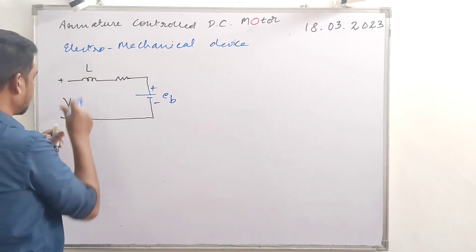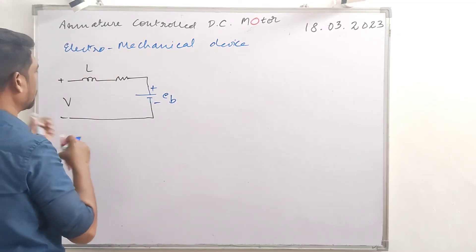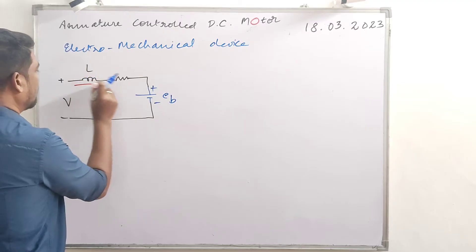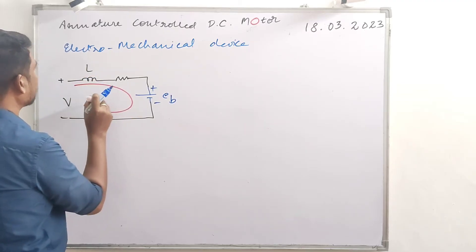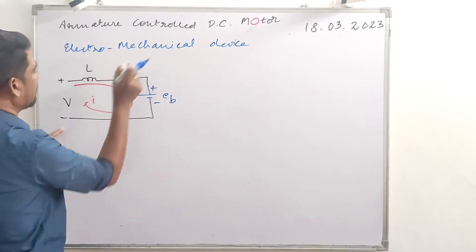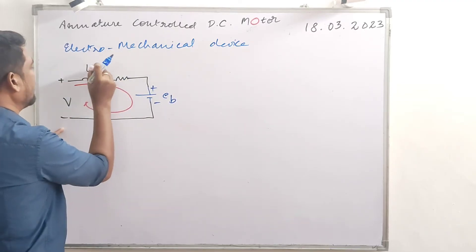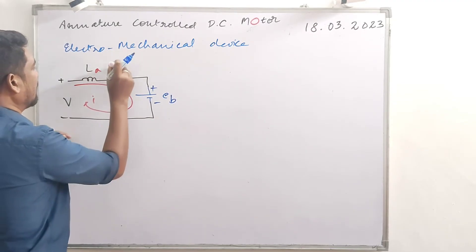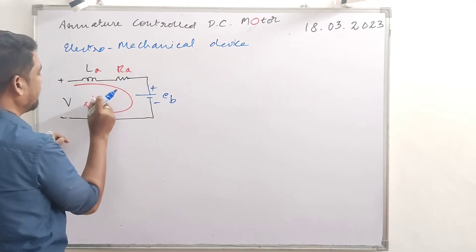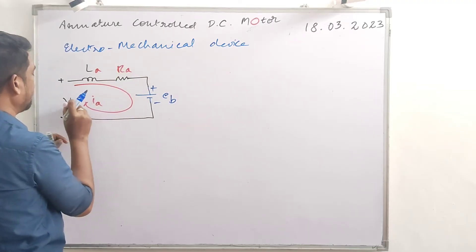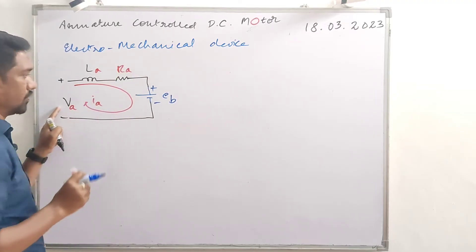The counter EMF is in phase or reversed depending on polarity. Back EMF is denoted EB. In the closed circuit, current flows — current flow is I. For armature control, we have LA, RA, IA, and VA as input voltage.